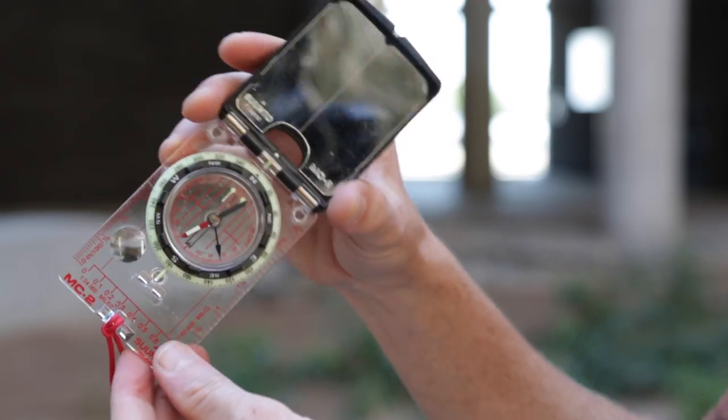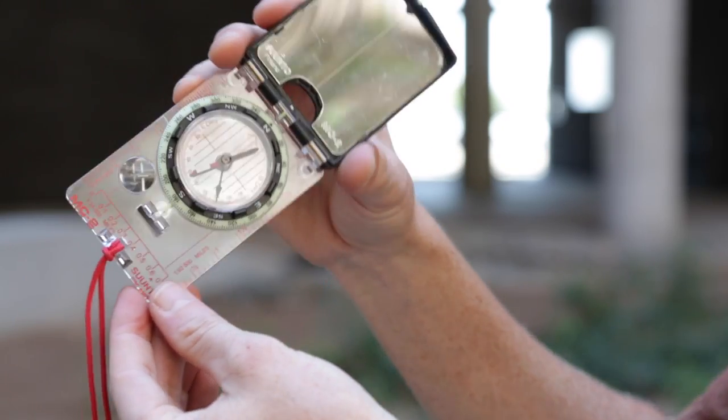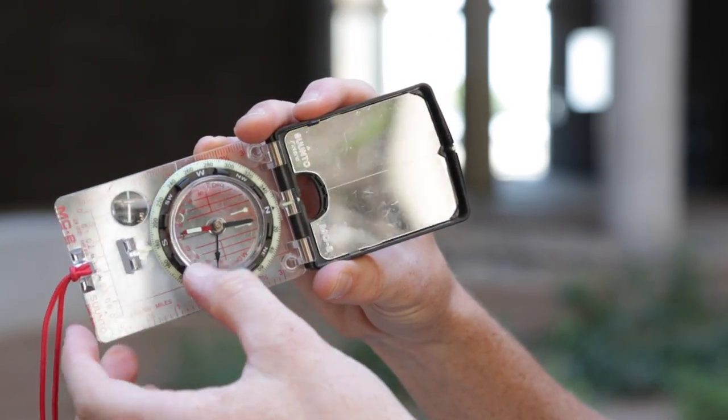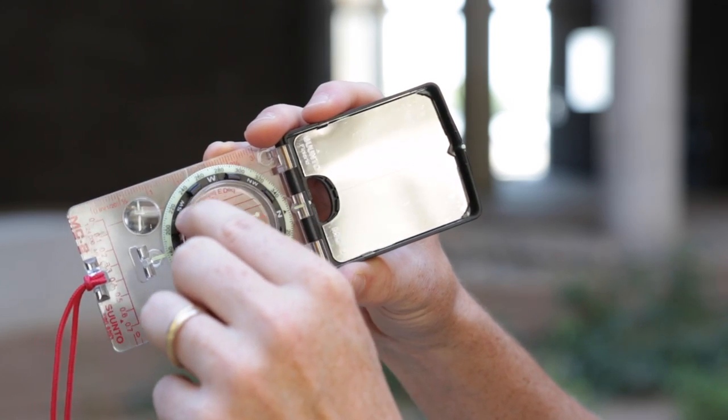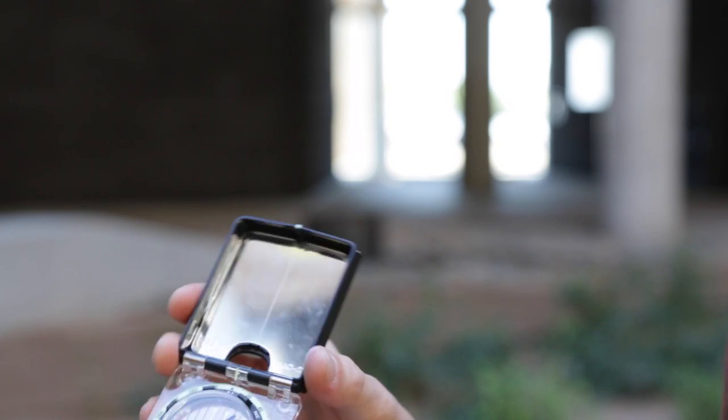And then you can also see that there's a little bit of a swing arm here. And then the last feature that you really need to know about is there's a grade, let's see, there's some markings that bend around the bottom of the compass that you can use to take slope.